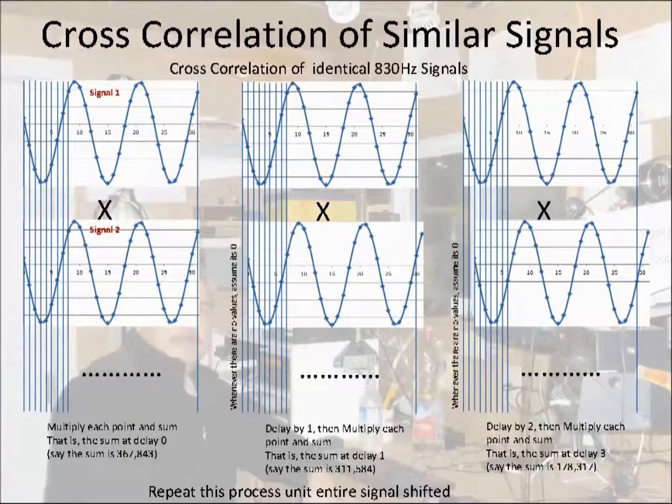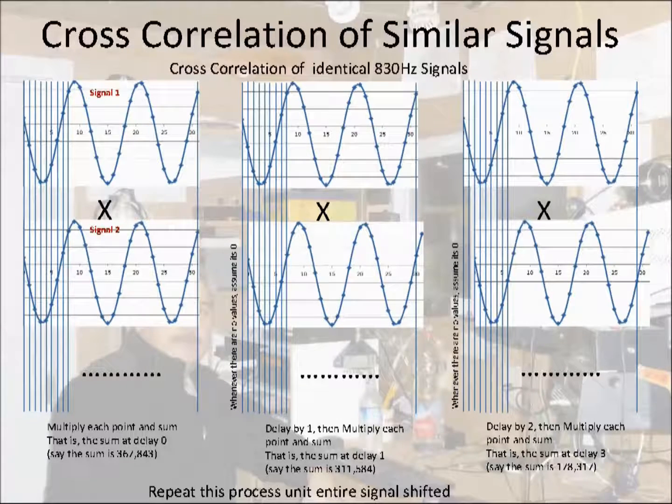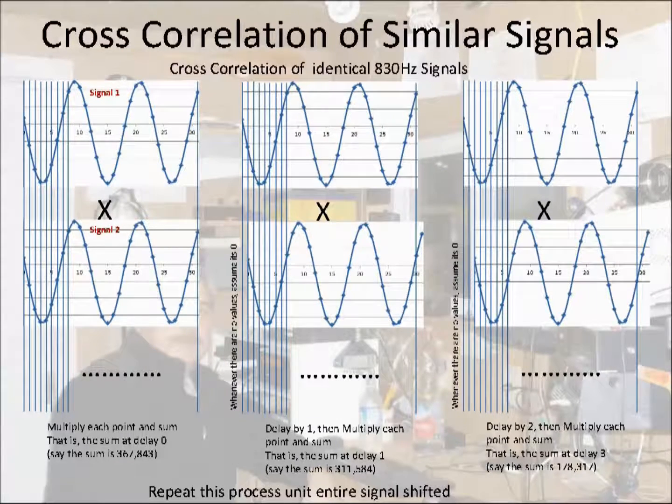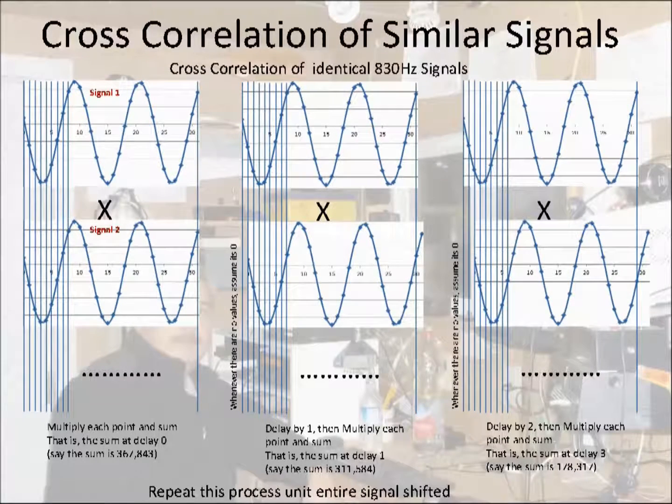Here's how correlation works to detect a frequency. This shows two 830 hertz signals that are being correlated or it's showing the autocorrelation of a single 830 hertz signal. First, you do a point by point multiplication of each point in the waveform and then sum all the multiplications. Then you shift or delay the signal and repeat the process. As you shift the one signal, you would shift in zeros or drop the signal that's being shifted out. You repeat this process until the shifted signal is completely shifted out and only zeros remain.